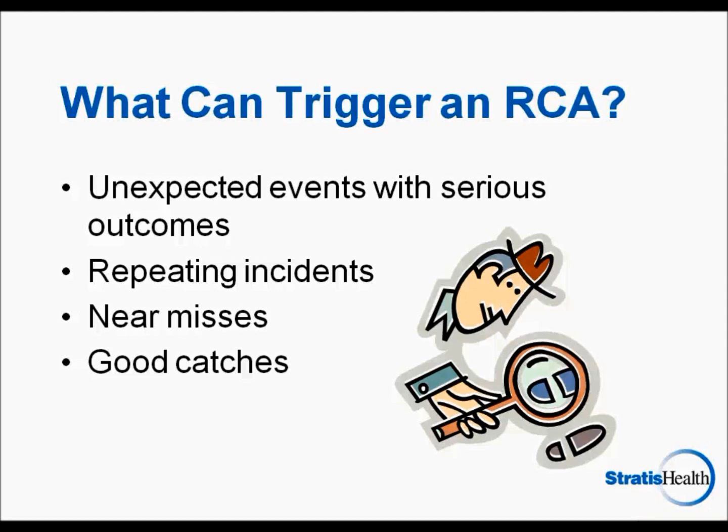Before we end, I want to touch on what types of events can trigger an RCA. The most common are unexpected events with serious outcomes, repeating incidents, near misses, and good catches. We may also find ourselves using the RCA process on a small scale to determine why something happened. Any opportunity to practice RCA and the RCA process helps us build our systems thinking skills.